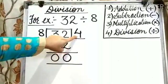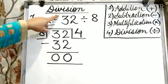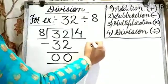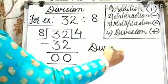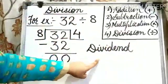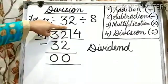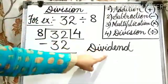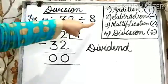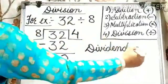Now, I will tell you some important terms which are related to division. The first term is dividend. What is dividend? The number that is being divided is called dividend. Here, we are dividing 32 by 8, so 32 is the dividend.